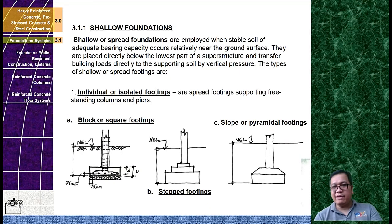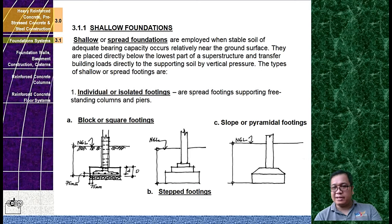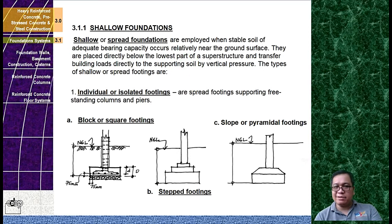Shallow or spread foundations are employed when stable soil of adequate bearing capacity is relatively near the ground surface. The key word here is adequate bearing capacity. They are placed directly below the lowest part of the superstructure and transfer building loads directly to the supporting soil by vertical pressure.